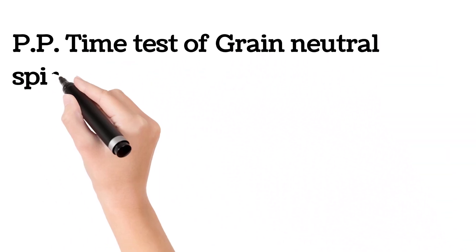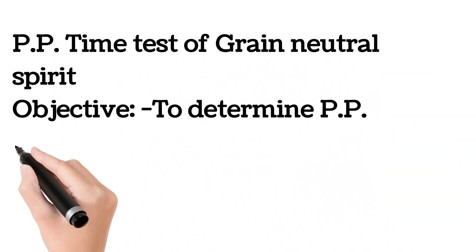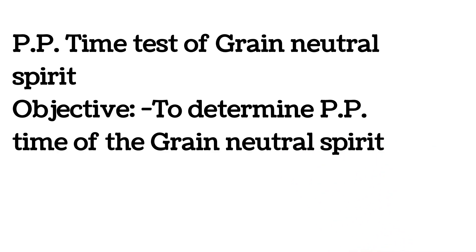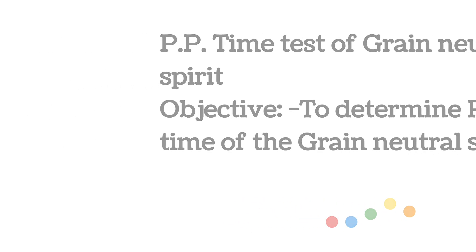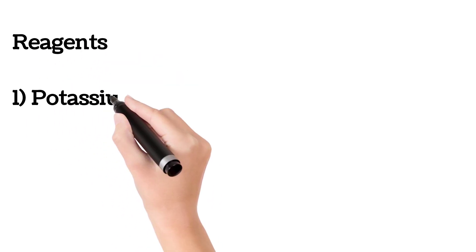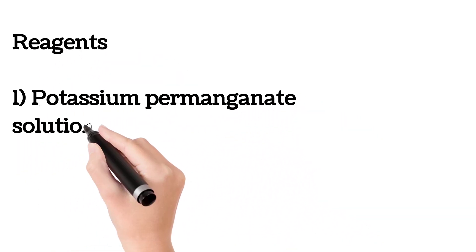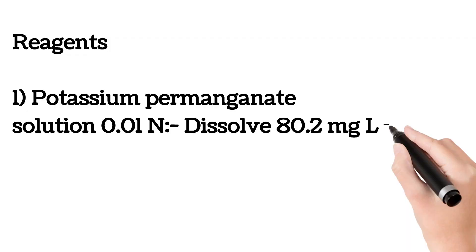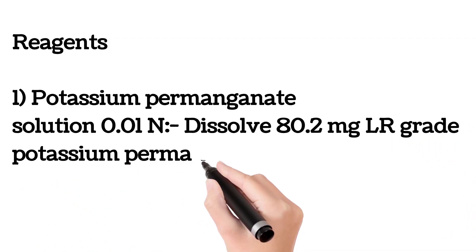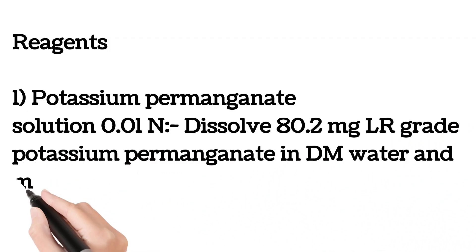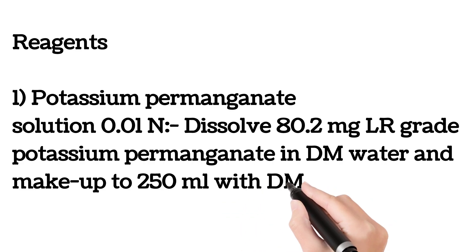PP time test of grain-neutral spirit. Objective: to determine PP time of grain-neutral spirit. Reagents: Potassium permanganate solution 0.01N. Dissolve 80.2 mg LR grade potassium permanganate in DM water and make up to 250 ml with DM water.